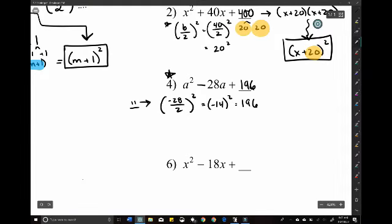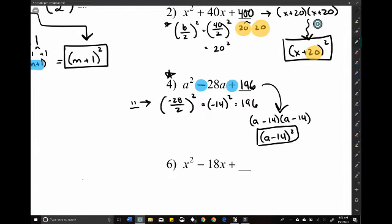Now, with subtraction, just remember, for this to be positive and this to be negative, then both of our factors would have to be negative. So really, we're looking at a minus 14 and a minus 14 or a minus 14 squared. So the other little trick is, well, if it's minus, it's going to be minus inside your final answer.